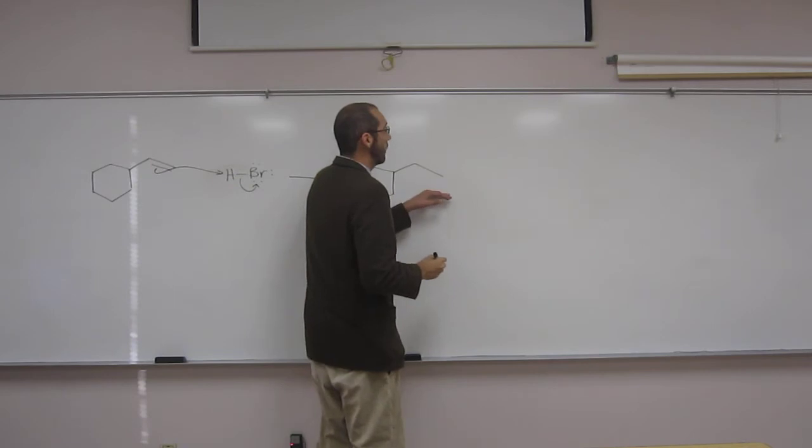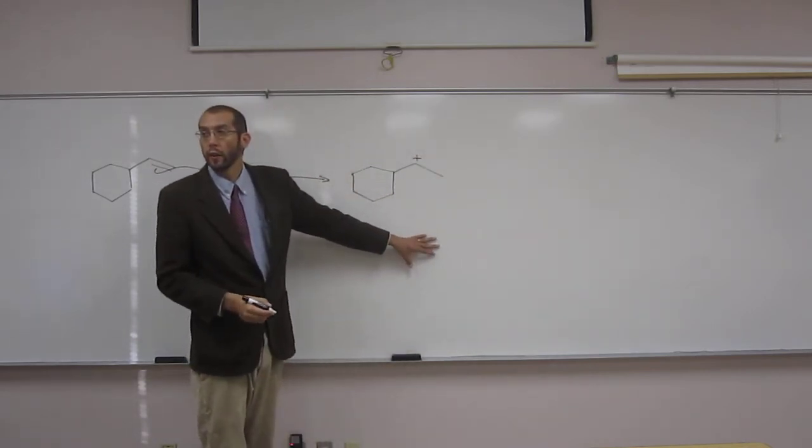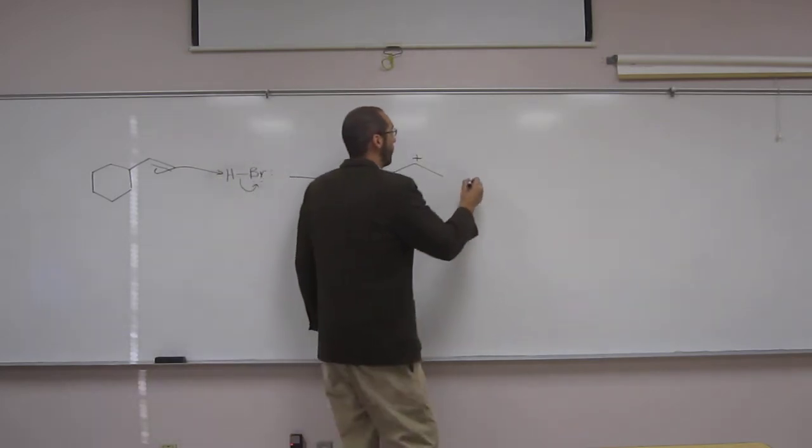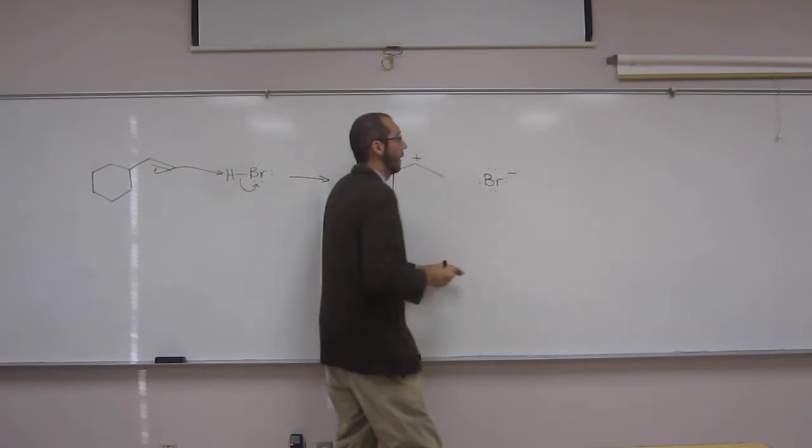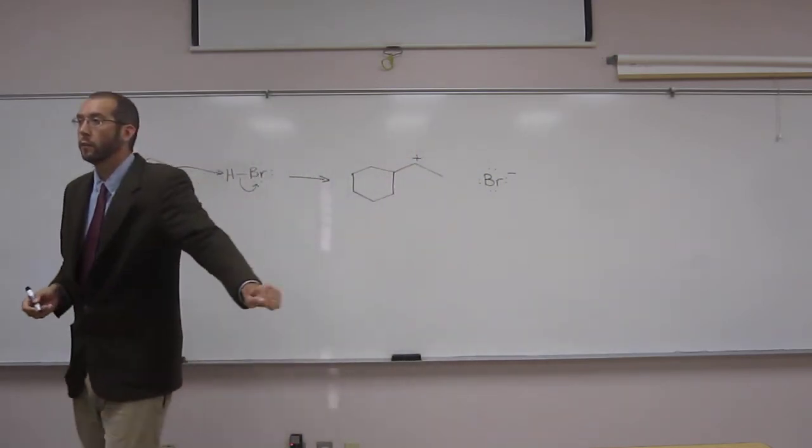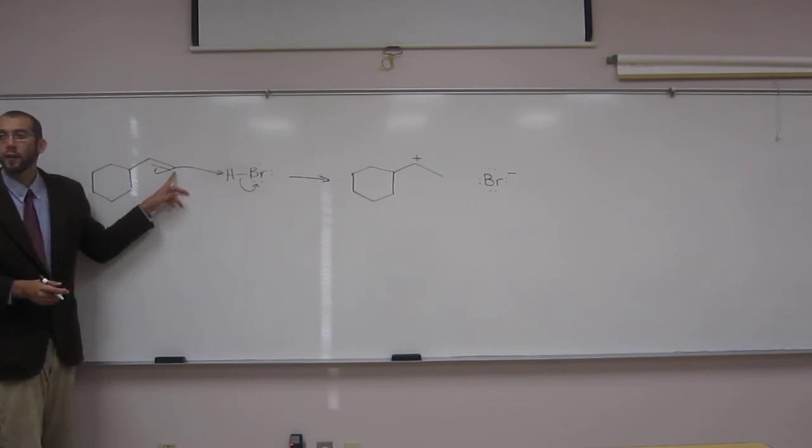So what we make is this carbocation here. And the very stable bromide ion. So remember, over here we've got two hydrogens.